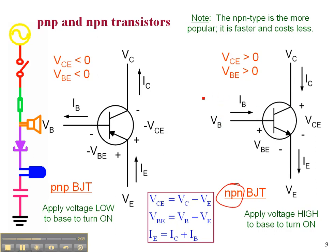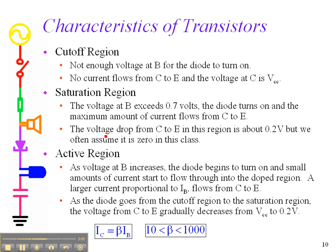We're going to be primarily dealing with the NPN transistors on the right, which give us current flowing in the downward direction. If we wanted current flowing in the upward direction, we'd use a transistor with the arrow going in the other direction, and it has to do with the way the transistor is built.